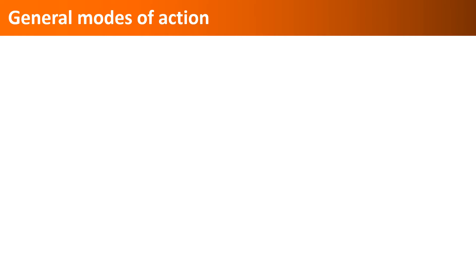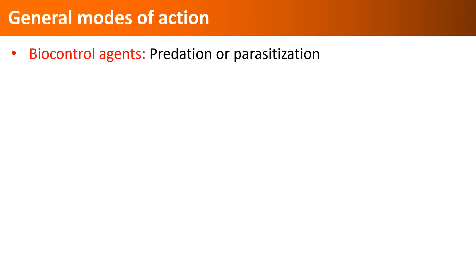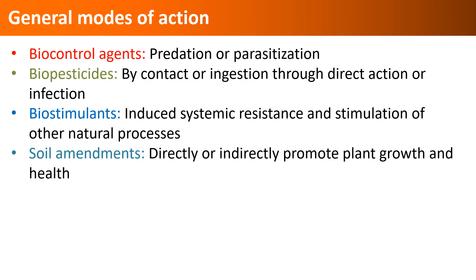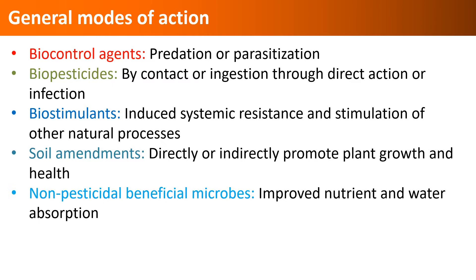If we look at how each of these work: biocontrol agents work through predation or parasitization; biopesticides are active either through contact or by infection; biostimulants induce systemic resistance and stimulate various natural processes that benefit plants; soil amendments promote plant growth and health directly or indirectly, similar to biostimulants; and non-pesticidal beneficial microbes improve bioavailability of nutrients and improve nutrient and water absorption, and impart tolerance to biotic and abiotic stresses.